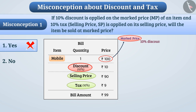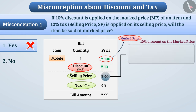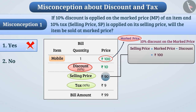Here, 10% discount is given on the marked price of the item. That is, if the value of the item is Rs. 100, then the discount will be Rs. 10. In this way, the selling price equals marked price minus discount, which is Rs. 100 minus Rs. 10, equal to Rs. 90.